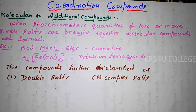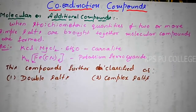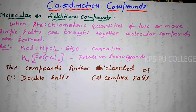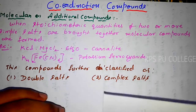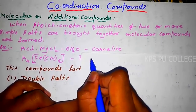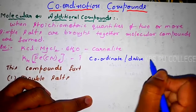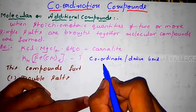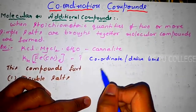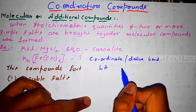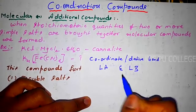Before going to that, I would like to explain the term coordination. In class 11, in the chapter of chemical bonding, we discussed about different types of bonds — ionic bond, covalent bond, hydrogen bonding — and another important bond is the coordinate bond, also called the dative bond.